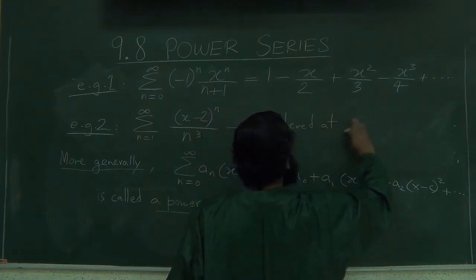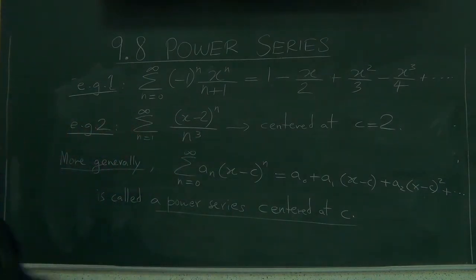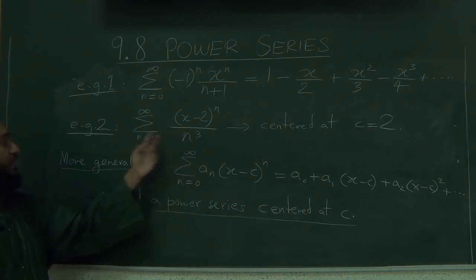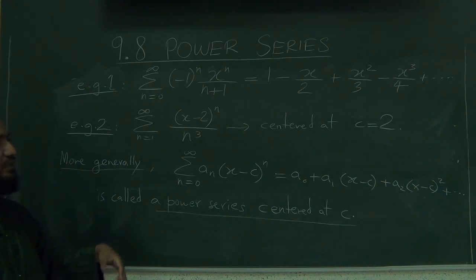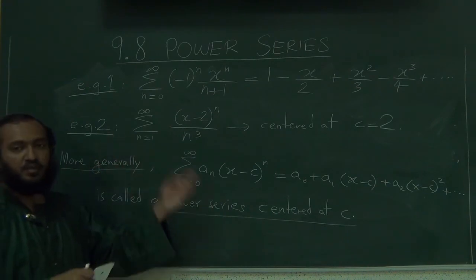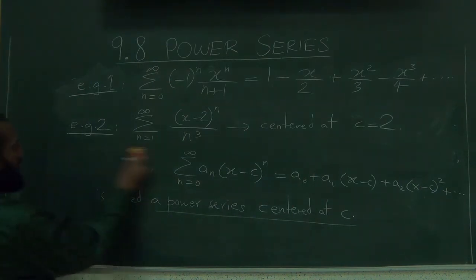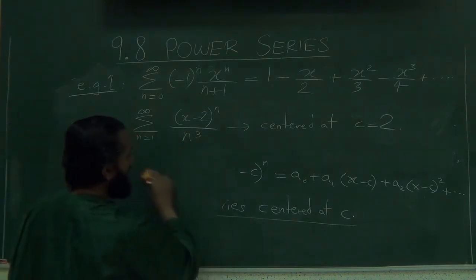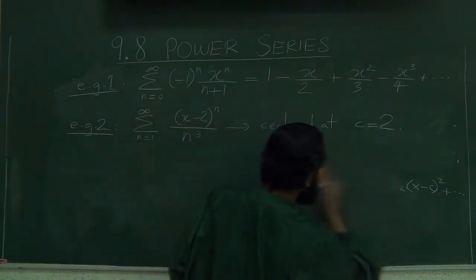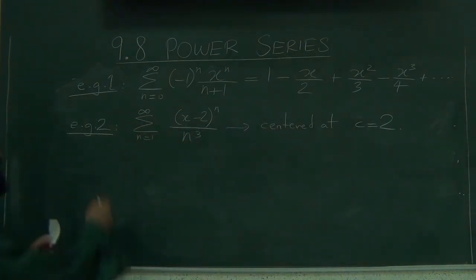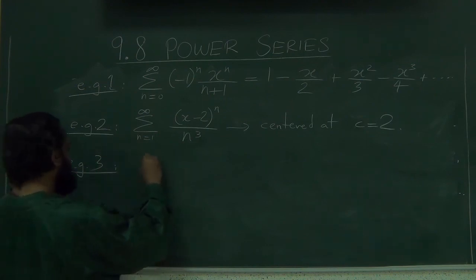So this is centered at C equal 2. And notice that because it's n cubed in the bottom there is no n equals 0 term, so in a particular series bunch of terms might be missing. The constant term might be missing or some of the powers of x might be missing. I'll write down one more example just to see how this centering in different places looks like.